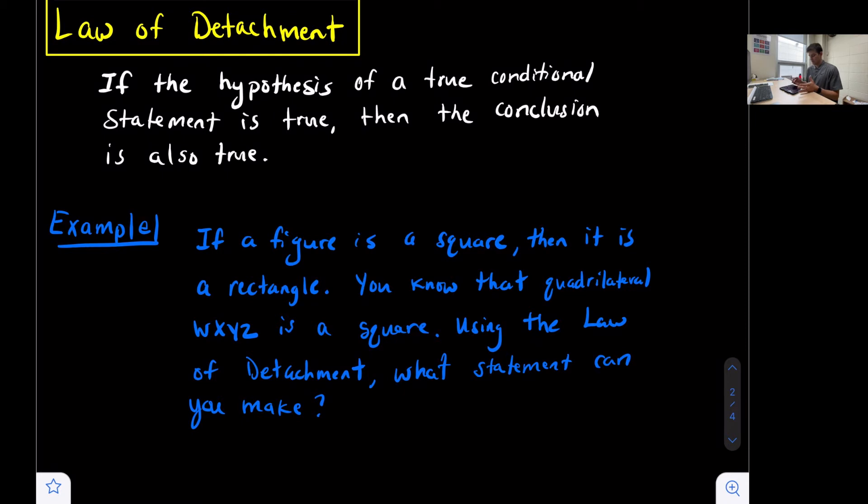Well, our original statement told us that if a figure is a square, then it is a rectangle. Now we have a quadrilateral that is a square, quadrilateral WXYZ. So since it is a square, and squares are rectangles, we could say quadrilateral WXYZ is a rectangle.